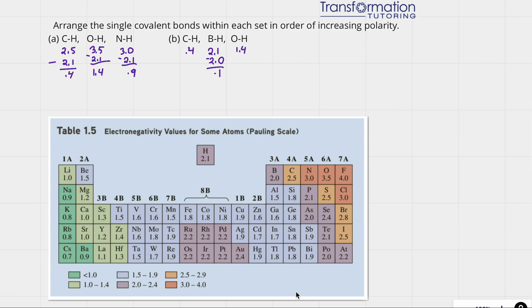Arrange the single covalent bonds within each set in order of increasing polarity. In order for us to do that, we need to have electronegativity values, which are provided in the chart I am showing you here. These tell us how electronegative an element is. The more electronegative something is, the more strongly it will pull on the electrons in a covalent bond.